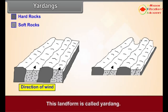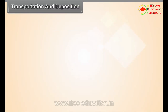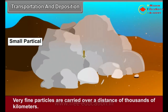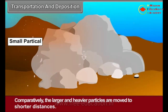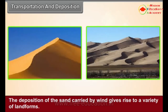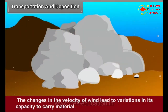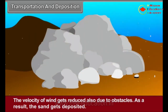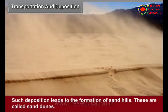Transportation of sand particles by wind depends upon their size. Very fine particles are carried over distances of thousands of kilometers, while comparatively larger and heavier particles are moved to shorter distances. The deposition of sand carried by wind gives rise to a variety of landforms. Sand Dunes: The changes in the velocity of wind lead to variations in its capacity to carry material. The velocity of wind is also reduced by obstacles. As a result, the sand gets deposited, leading to the formation of sand hills called sand dunes.